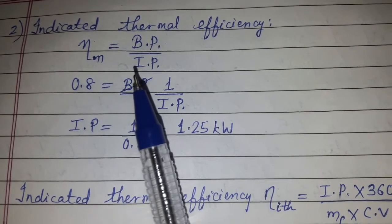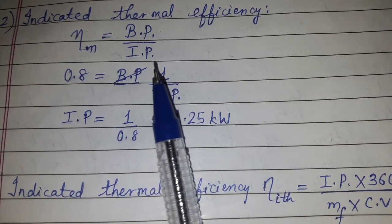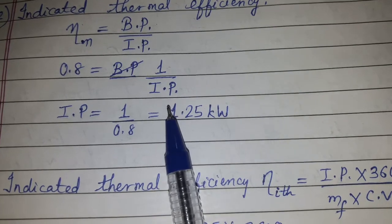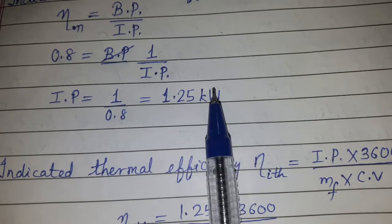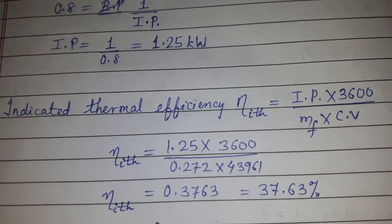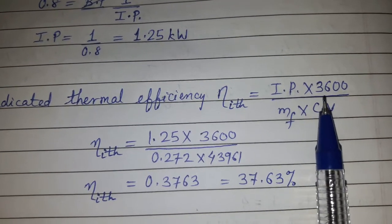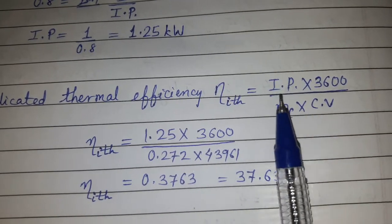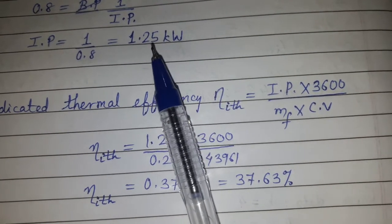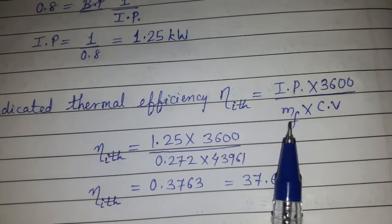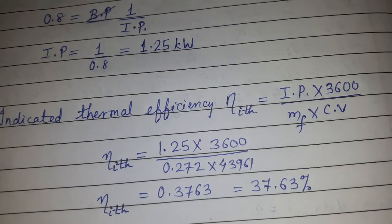Now we calculate indicated thermal efficiency. We know that mechanical efficiency equals BP upon IP, so IP equals BP divided by mechanical efficiency, which gives IP equal to 1 divided by 0.8, so IP equals 1.25 kilowatt. We calculate IP because indicated thermal efficiency requires IP — the formula is IP multiplied by 3600, divided by MF multiplied by CV.